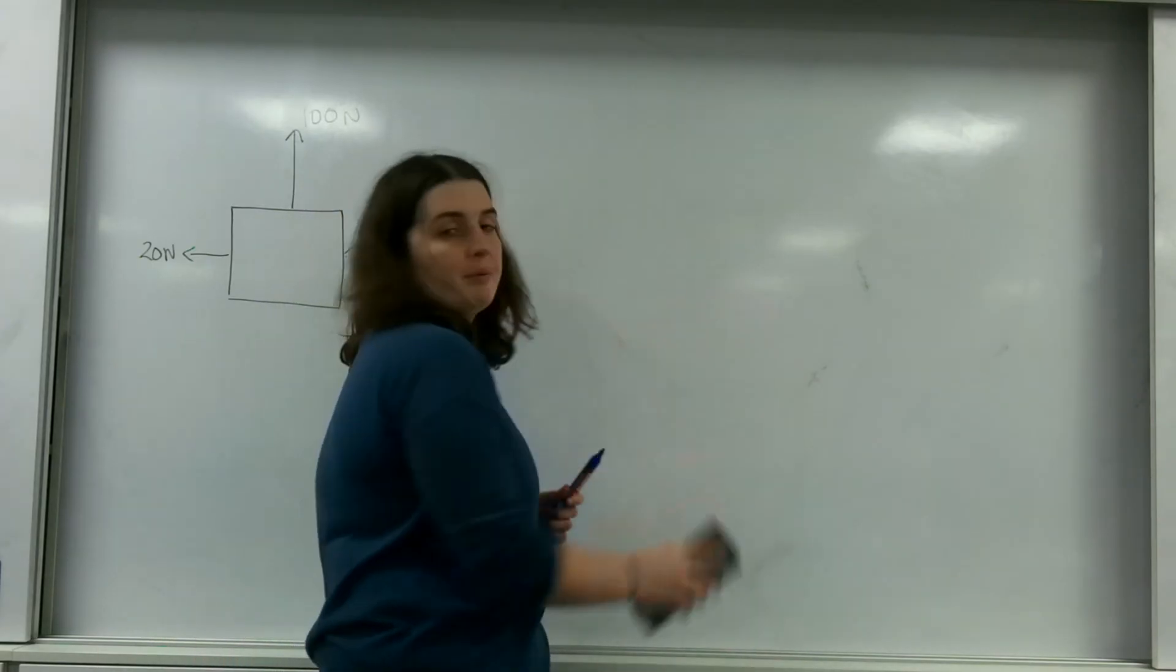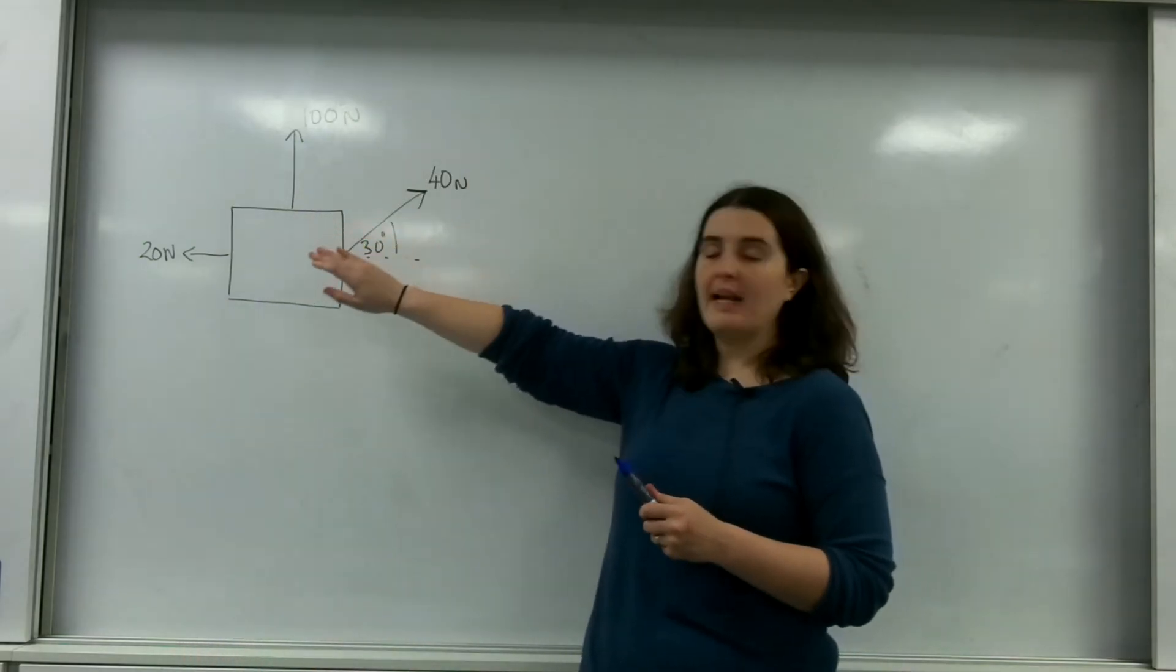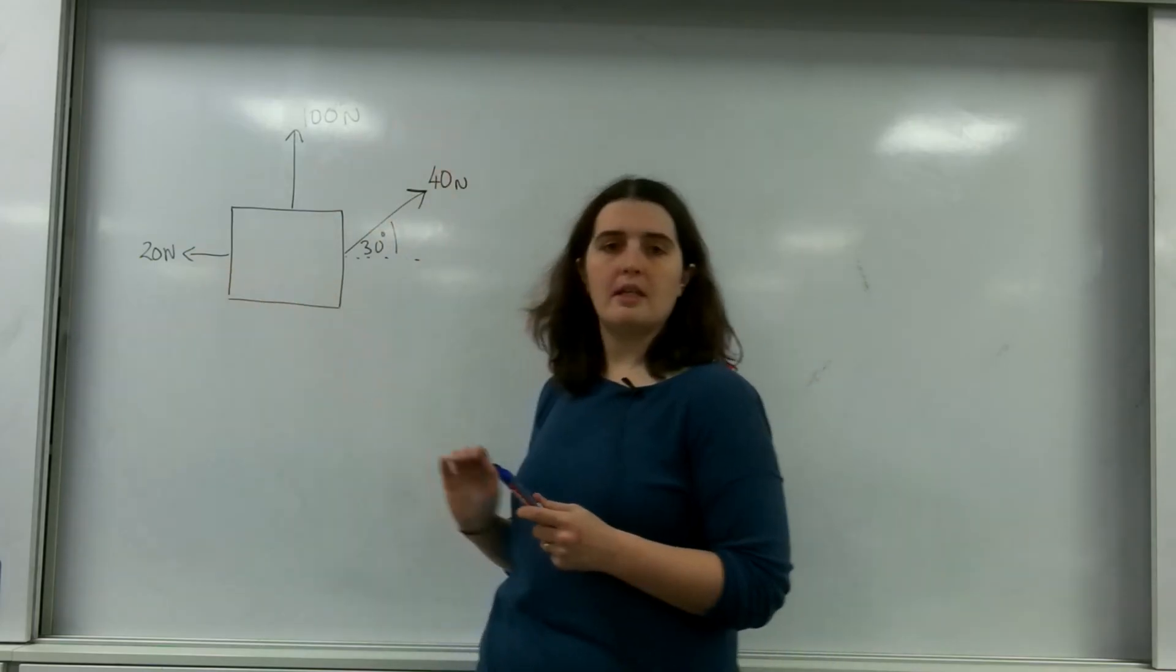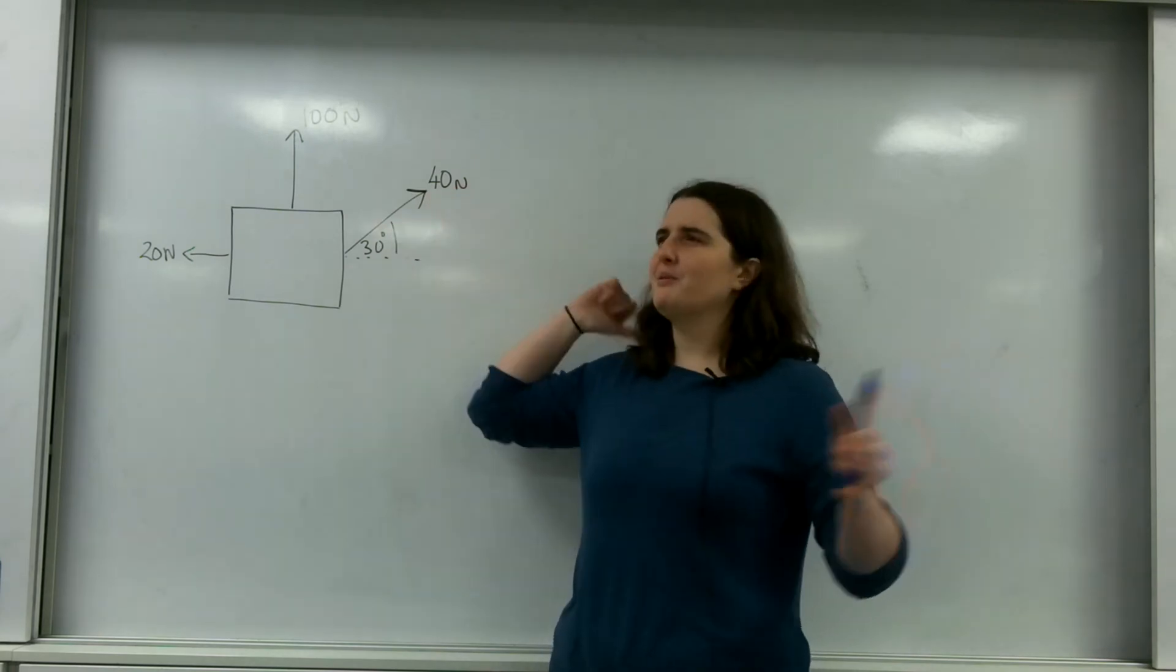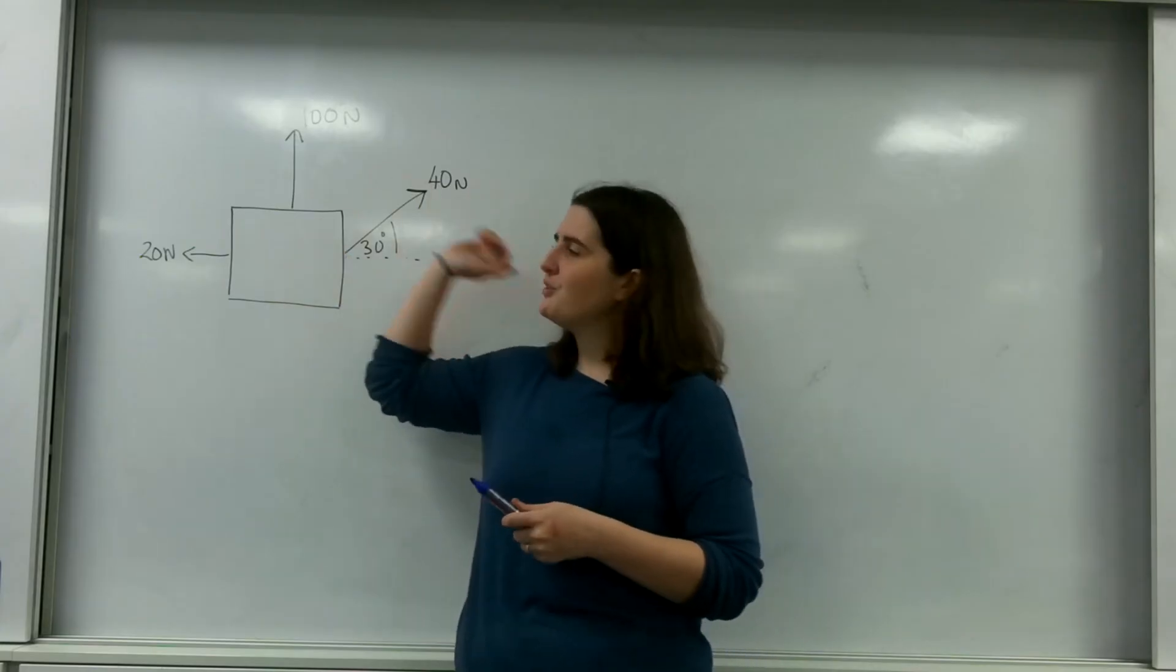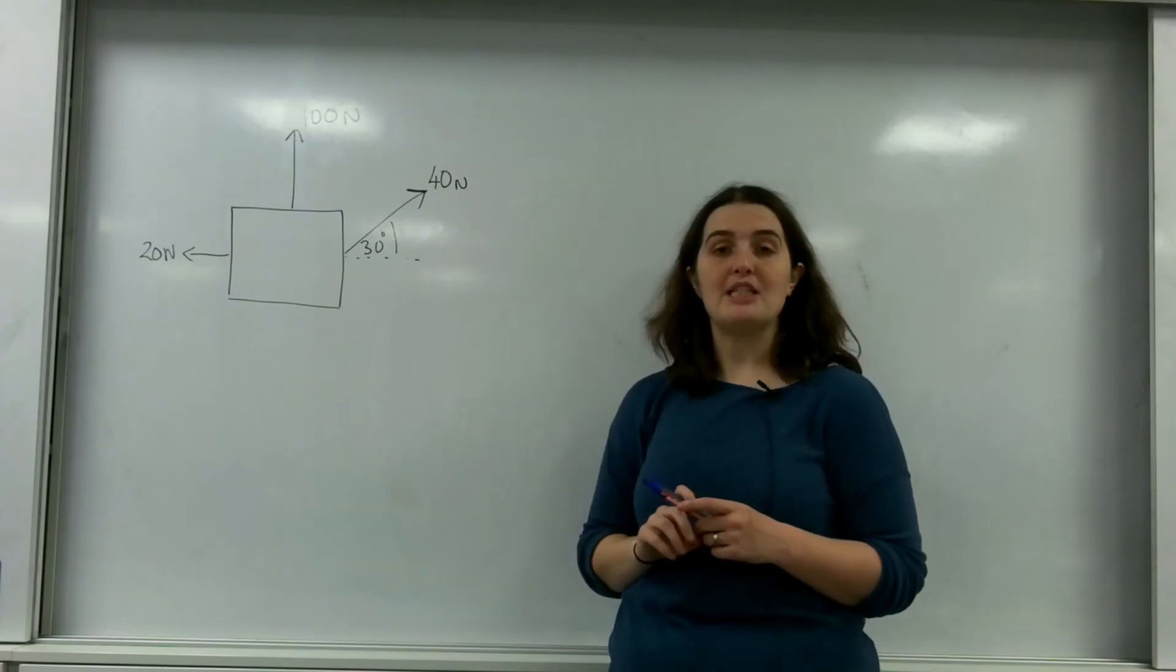So how do we solve a problem? On the board I have a box with 100 newtons going up, 20 newtons going to the left, and 40 newtons going this way at an angle of 30 degrees.